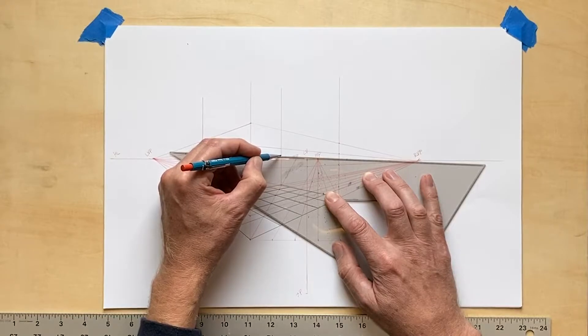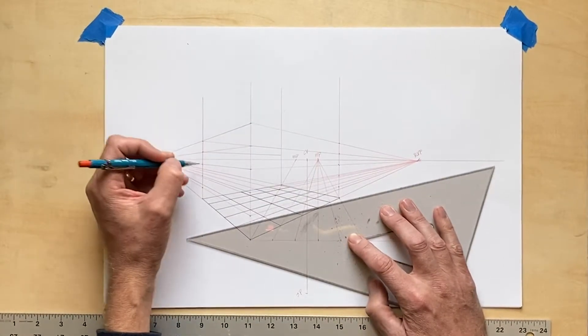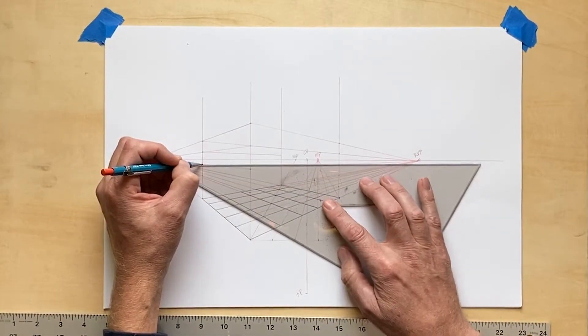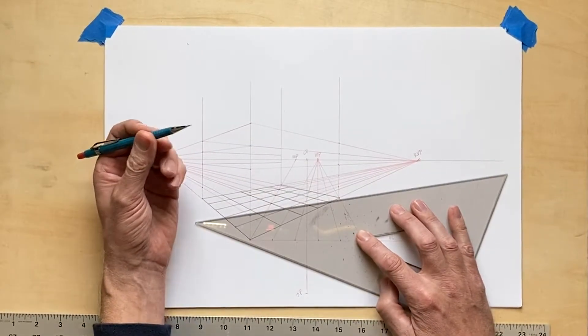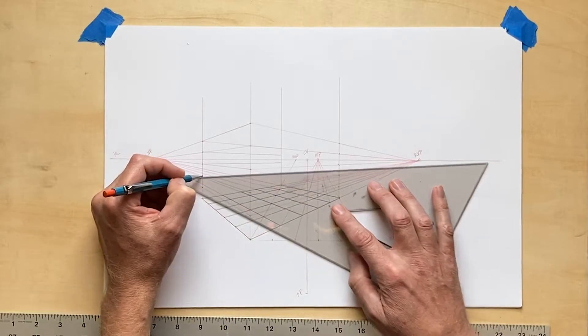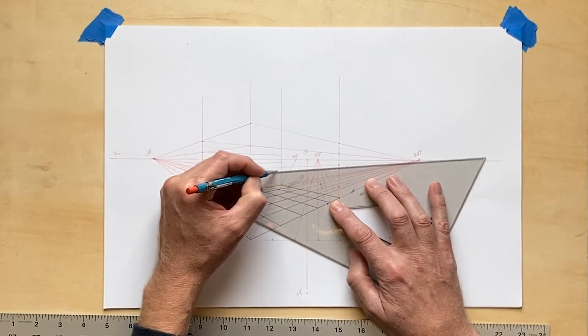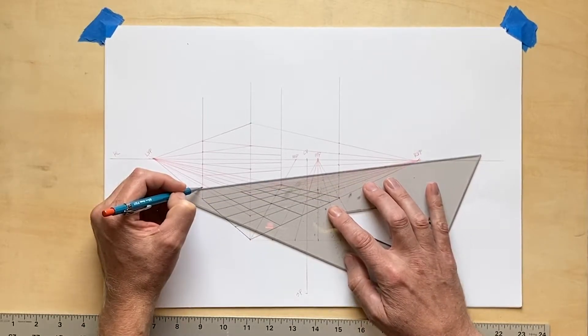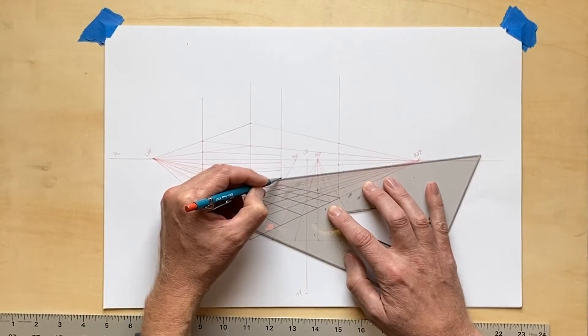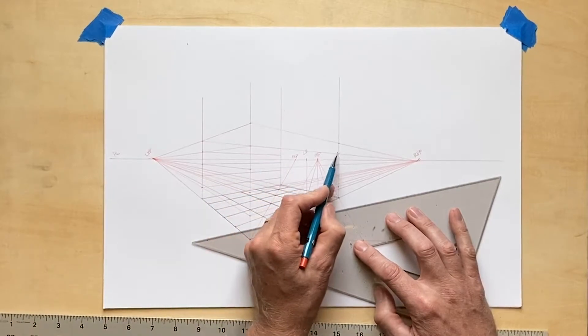In order to keep my paper nice and clean, I've chosen not to connect all the way to the vanishing points. As you can see I'm already getting a lot of lines being drawn. I'm also terminating those lines at that back elevation line, the transversal that represents the furthest edge of my room.